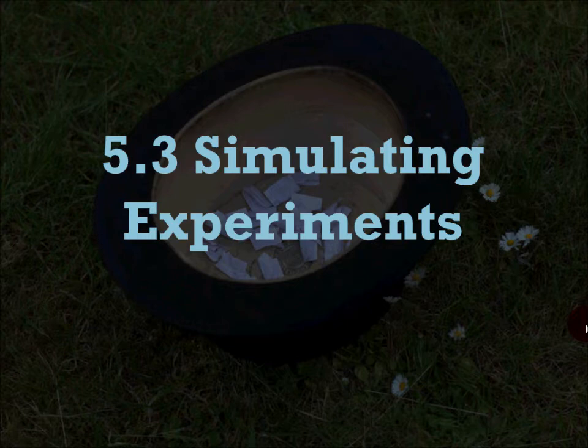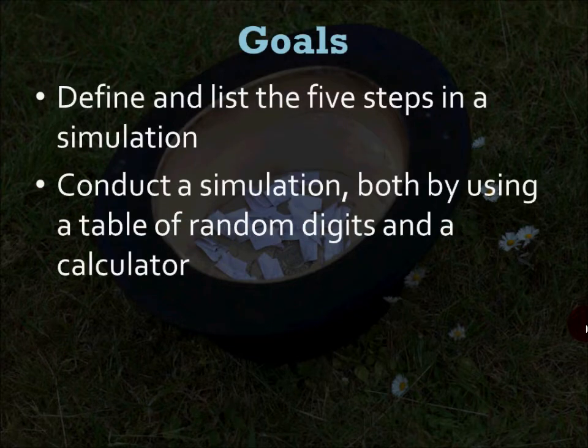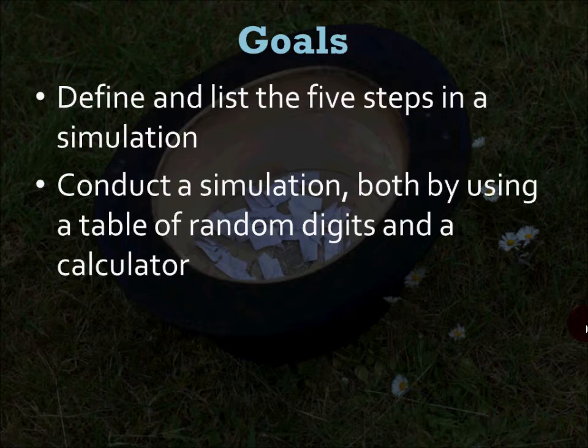Hopefully everyone had a chance to do the age discrimination activity because I'm going to reference it during these notes. Two goals today: define a list of five steps in a simulation, and then you are going to conduct a simulation or two using a table of random digits or the numbers I give you and a calculator.